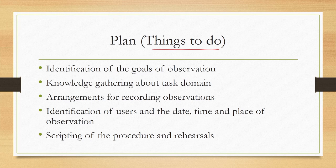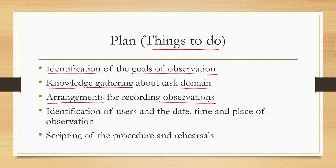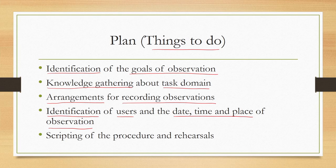In the Plan stage, we generally create a plan of what needs to be done. It involves identification of the goals of observation — what we want to observe — prior knowledge gathering about the task domain, arrangements for recording the observations, how to record the behavior, identification of users, and the date, time, and place of observation. All these can be converted to a script and rehearsed many times before the actual observation takes place so that it is smoothly done.